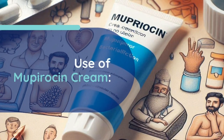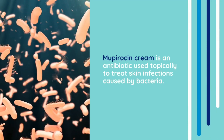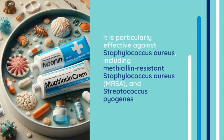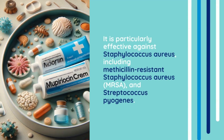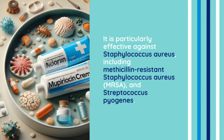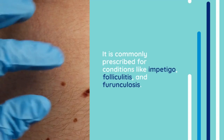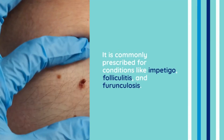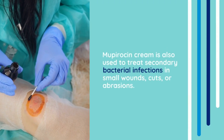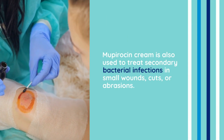Now let's get started. Use of Mupiracin Cream: Mupiracin Cream is an antibiotic used topically to treat skin infections caused by bacteria. It is particularly effective against Staphylococcus aureus, including methicillin-resistant Staphylococcus aureus and Streptococcus pyogenes. It is commonly prescribed for conditions like impetigo, folliculitis, and furunculosis. Mupiracin Cream is also used to treat secondary bacterial infections in small wounds, cuts, or abrasions.